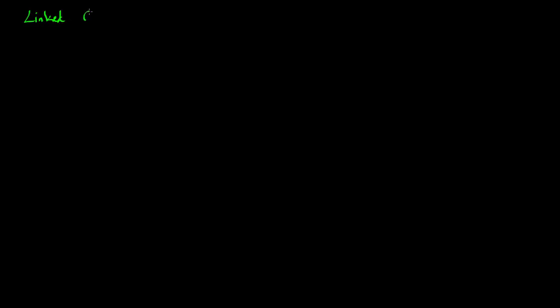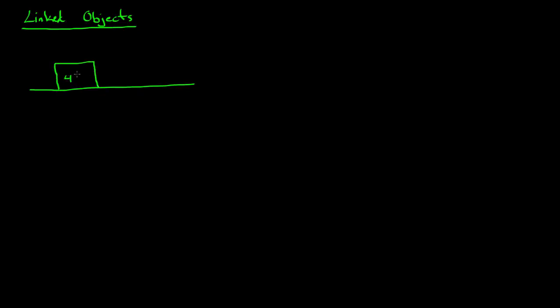Okay, so now we're going to look at linked objects. These are things that are tied together with strings and stuff. So linked objects. The simplest case to look at is going to be masses on strings. I'll just do two. So let's say we had a four kilogram block connected to a two kilogram block, and then we're pulling it with a tension of six newtons.